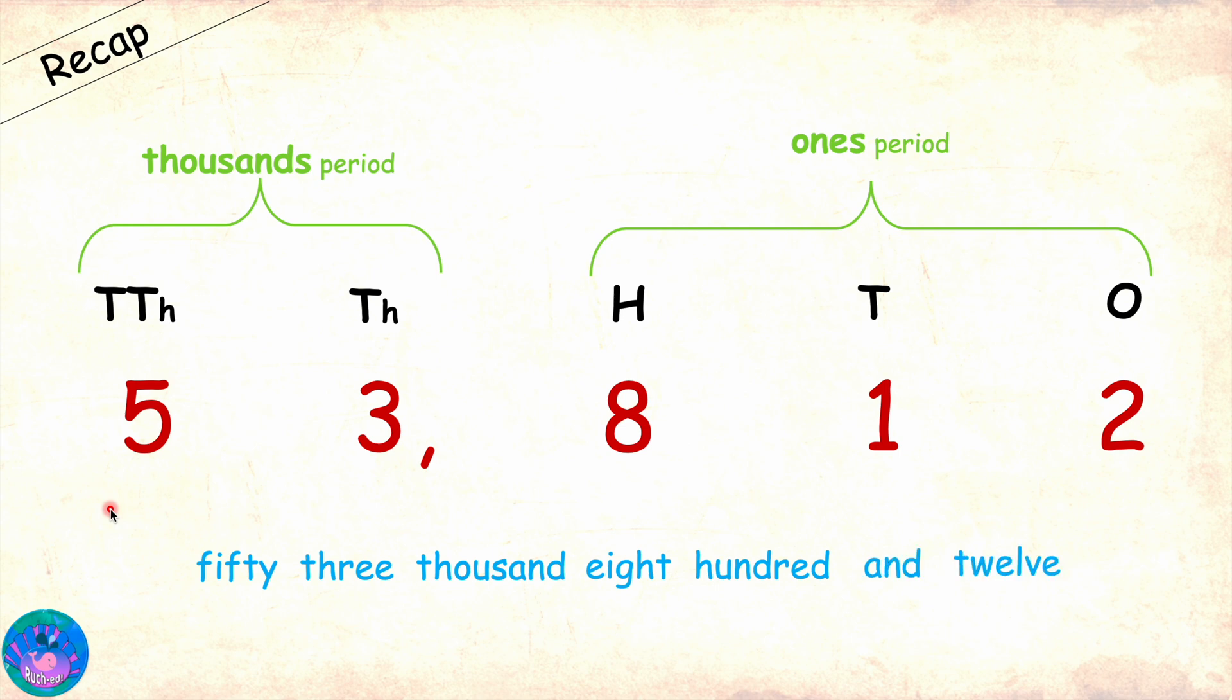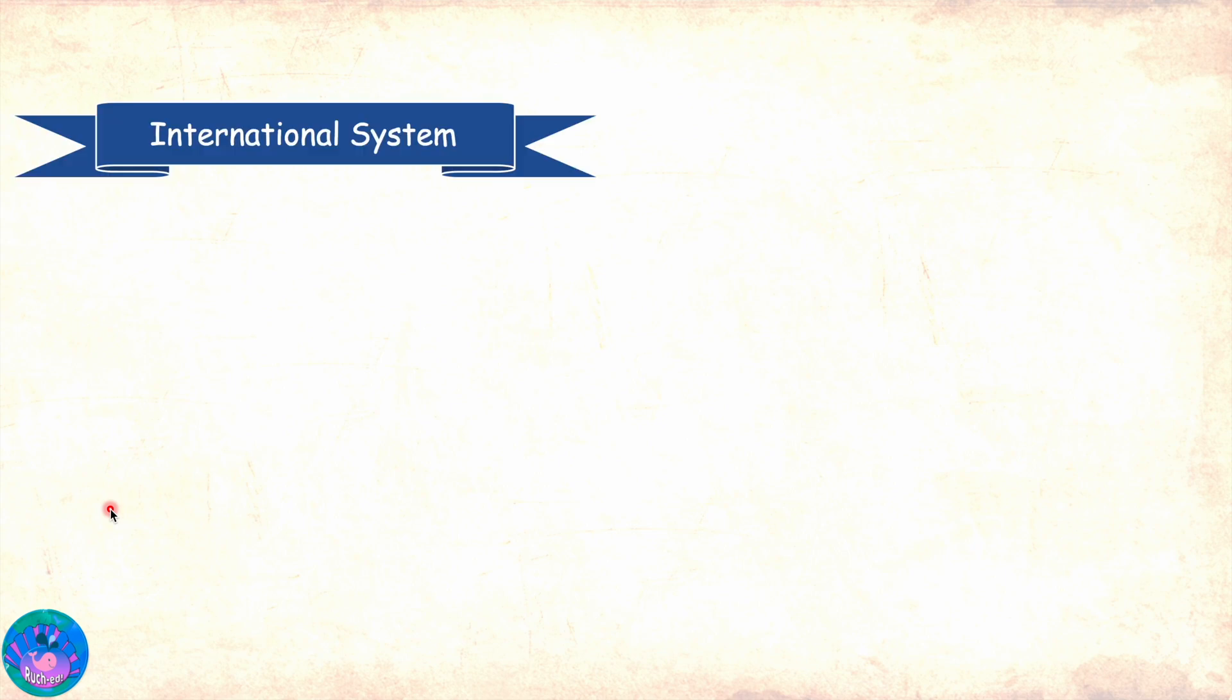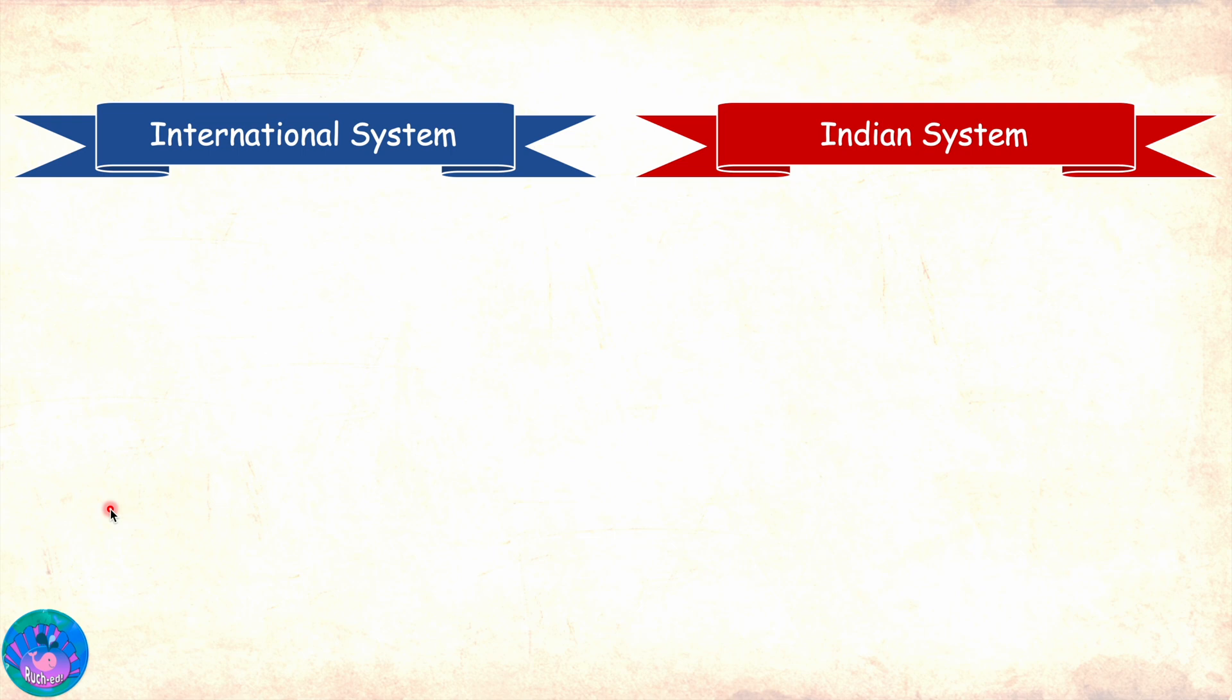Excellent. Now, for numbers with six digits and higher, there are two systems for reading and writing base ten numbers. They are the international system and the Indian system. There are some commonalities and some differences between the two. Let's first talk about the commonalities.